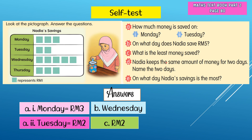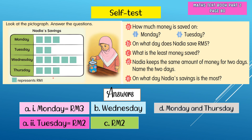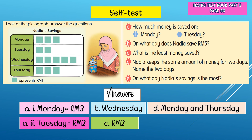What is the least money saved? The least money saved is two ringgit. Nadia saves the same amount of money on two days — which days? Both Monday and Thursday show three ringgit each, so the answer is Monday and Thursday. On what day is Nadia's saving the most? Five ringgit is the most, so the answer is Wednesday.